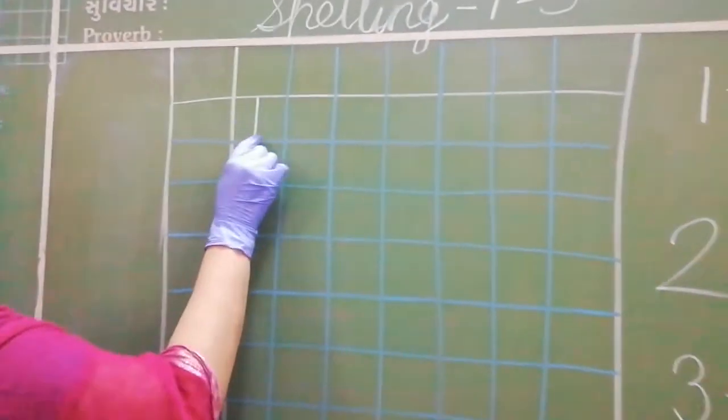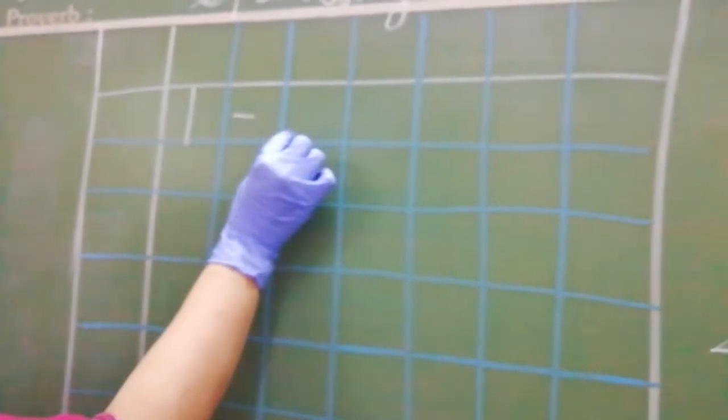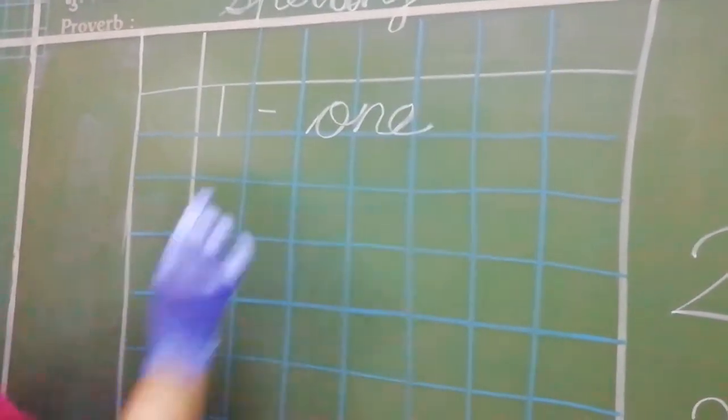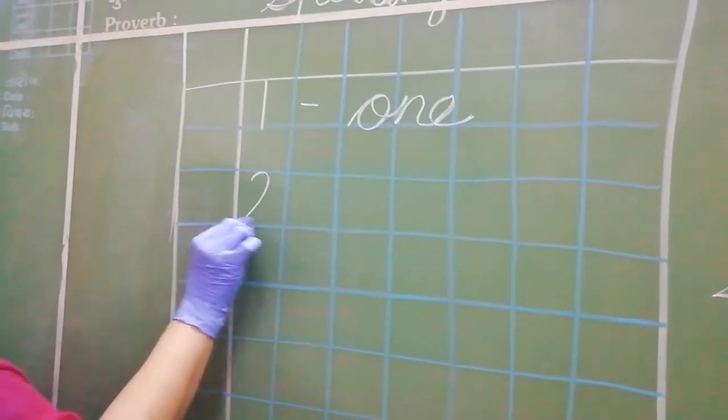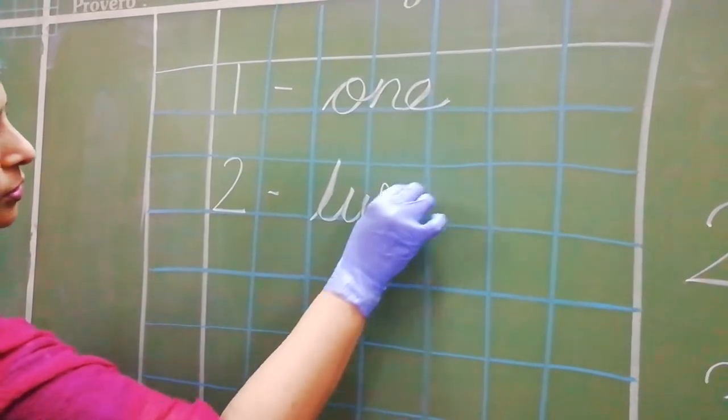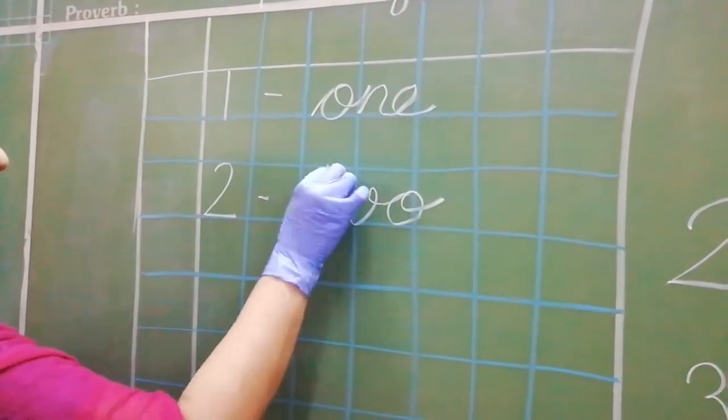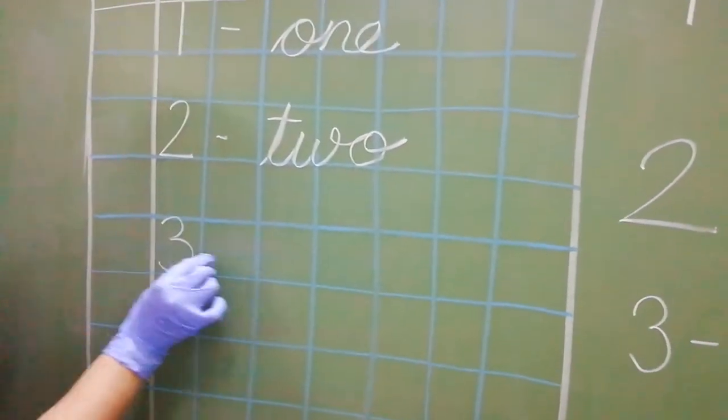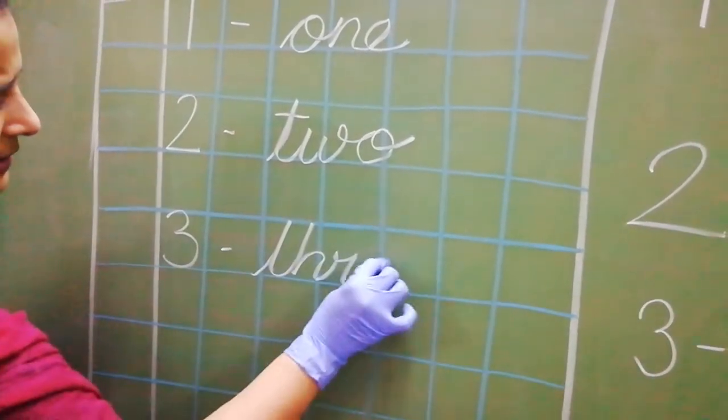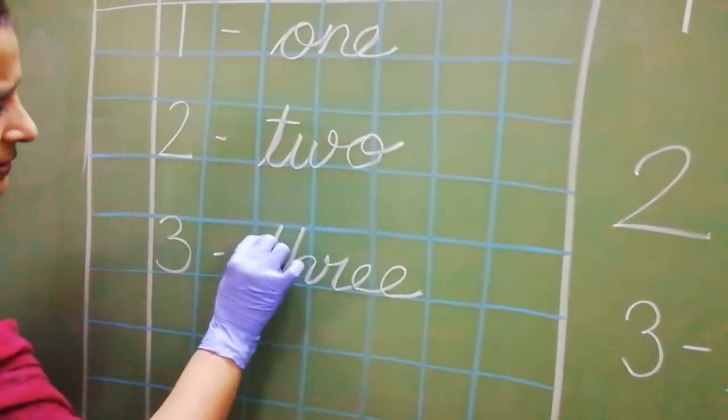See, I will write it here. Just say it, little children. Number 1. Spelling of 1 is o-n-e, 1. Spelling of 2 is t-w-o, 2. Spelling of 3 is t-h-r-e-e, 3.